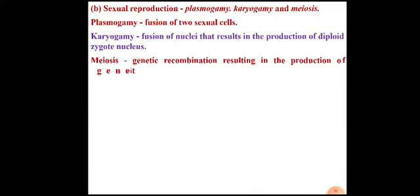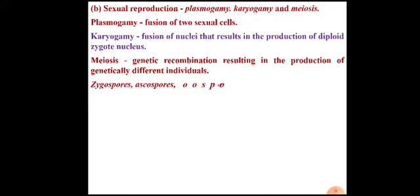The third step is meiosis, which as we have learned is a reductive type of division involving genetic recombination, resulting in production of genetically different individuals. As a result of sexual reproduction, four types of spores may be formed depending on the type of fungus: zygospores, ascospores, oospores, and basidiospores.